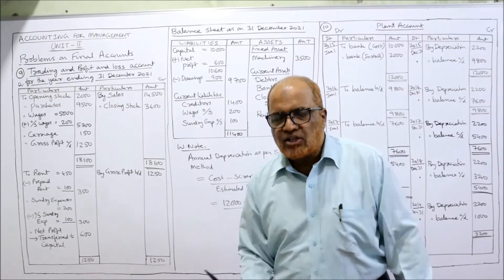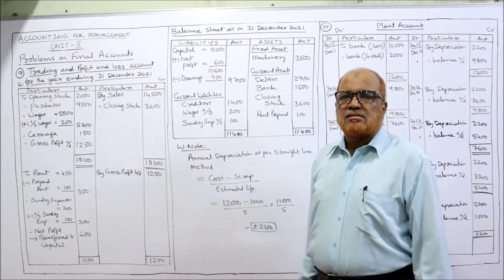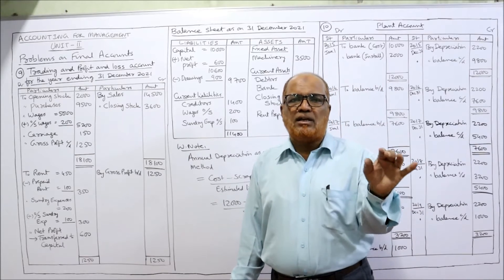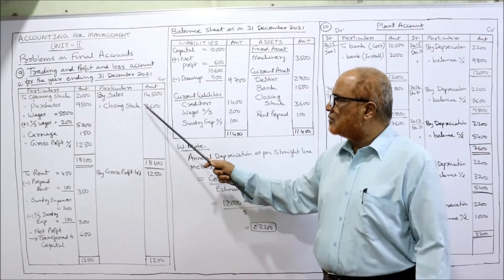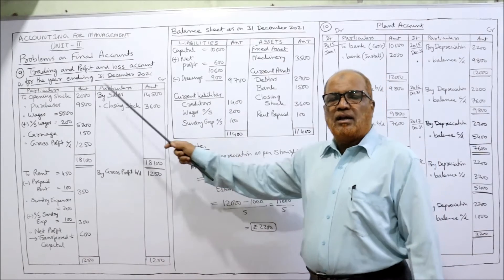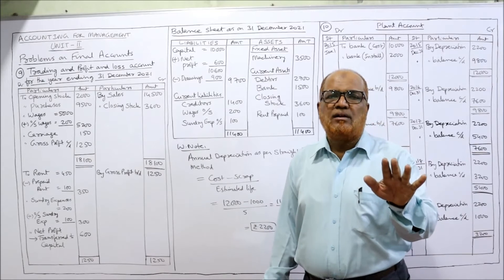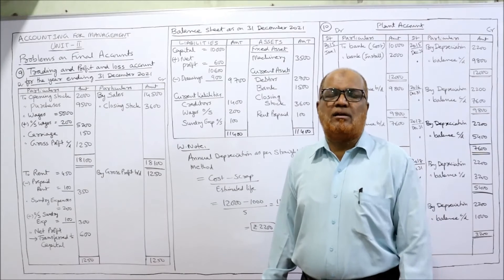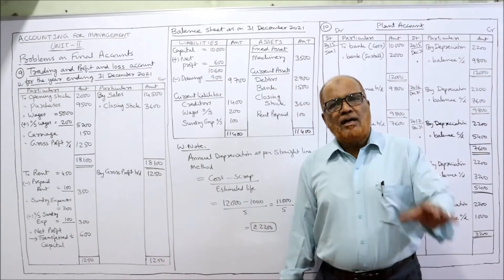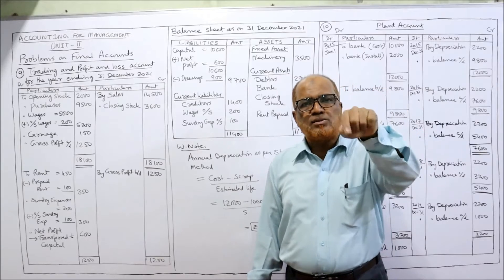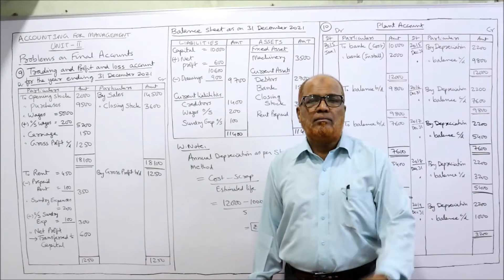The presentation will be: Trading and Profit and Loss Account for the year ended 31st December 2021. On the credit side — sales: no sales return is given so we take it directly in the outer column. Closing stock 3,600 from the first adjustment — only two items on the credit side. On the debit side — opening stock 2,000 is given. Purchases: there is no purchase return, so we take 9,500 directly in the outer column.